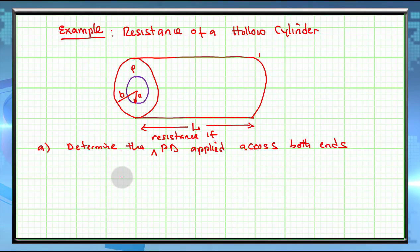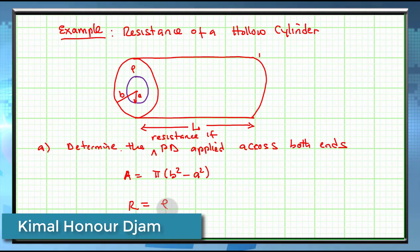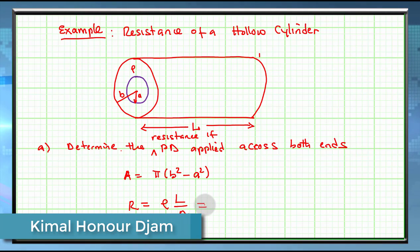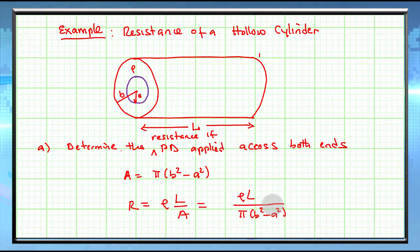So we know that the total area will be given by π(B² - A²). And the resistance R therefore will be given by ρL divided by A, which will be equal to ρL divided by π(B² - A²). And that will be your answer.